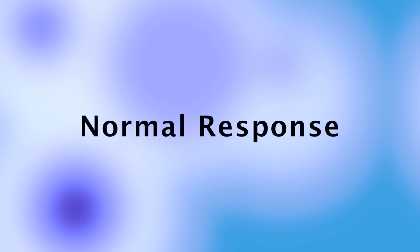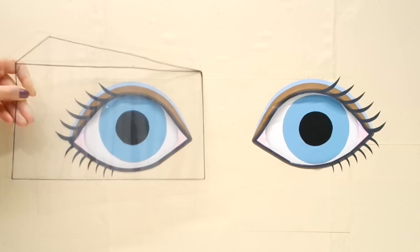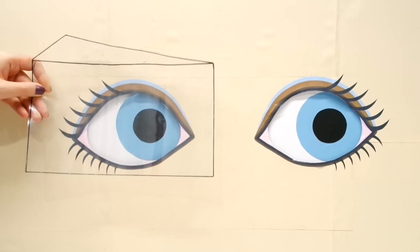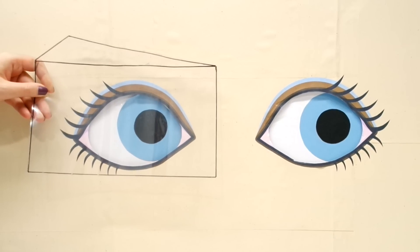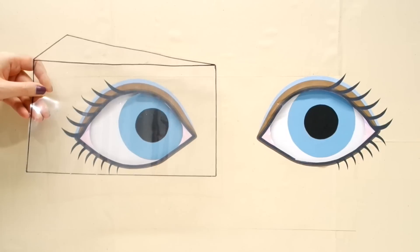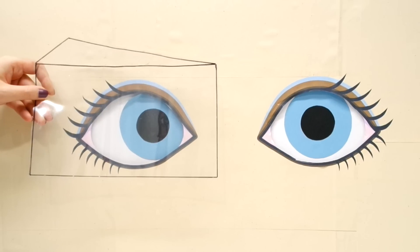When performing the 4-Prism Diopter test a normal response is when you put the prism in front of either eye, the contralateral eye should make a conjugate movement out resulting in diplopia which then drives the movement back in to take up bifoveal fixation.